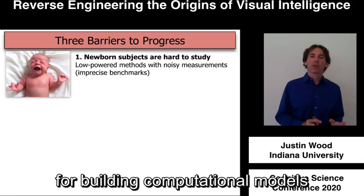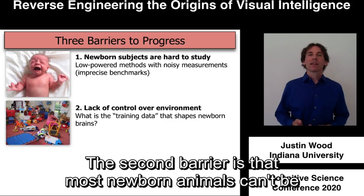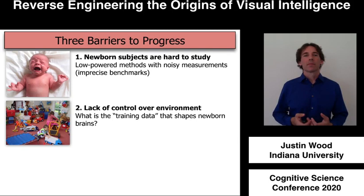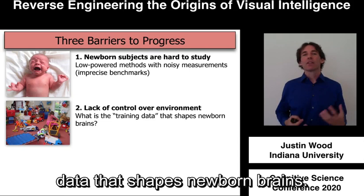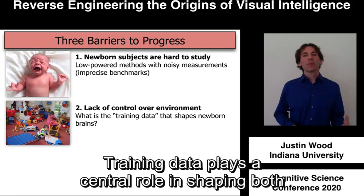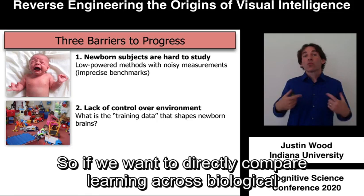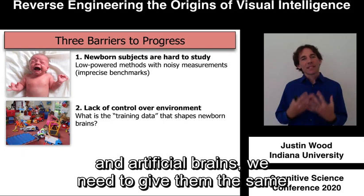The second barrier is that most newborn animals can't be raised in strictly controlled environments from birth. As a result, we can't control and manipulate the training data that shapes newborn brains. Training data plays a central role in shaping both biological and artificial neural networks, so if we want to directly compare learning across biological and artificial brains, we need to give them the same set of training data.